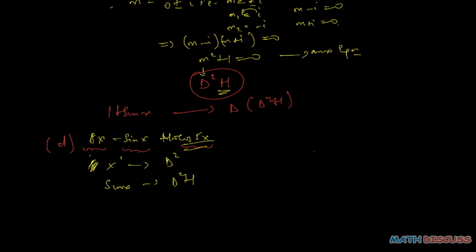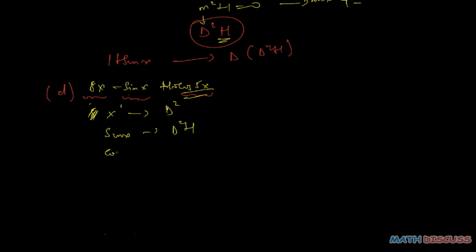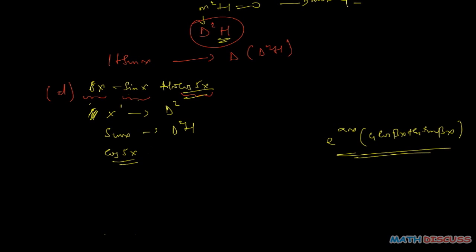Now for cosine(5x): since cosine(5x) falls into the category e^(alpha*x) times [c1*cos(beta*x) + c2*sin(beta*x)], I'm going to write cosine(5x) in that format. Since there is no exponential term, it becomes e^(0x) times [c1*cos(5x) + c2*sin(5x)]. This simplifies since e^0 equals 1, so we still have cosine(5x). The next step is to identify alpha and beta.